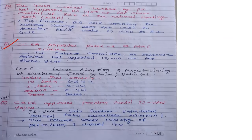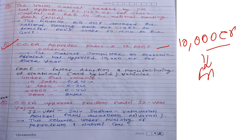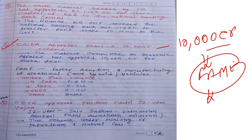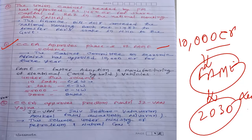Fourth current affair: CCEA approved Phase 2 of the FAME scheme, with government allocating ₹10,000 crore. FAME stands for Faster Adoption and Manufacturing of Electric and Hybrid Vehicles. By 2030, nearly 40% of vehicles are expected to be electric, and India wants to adopt this technology to reduce CO2 emissions and pollution.